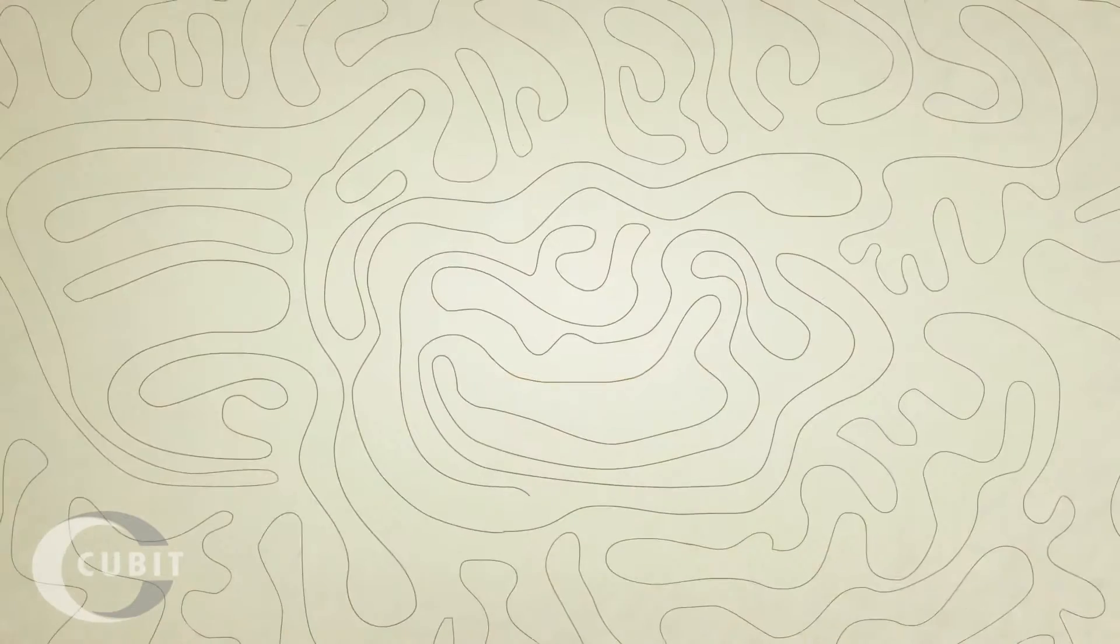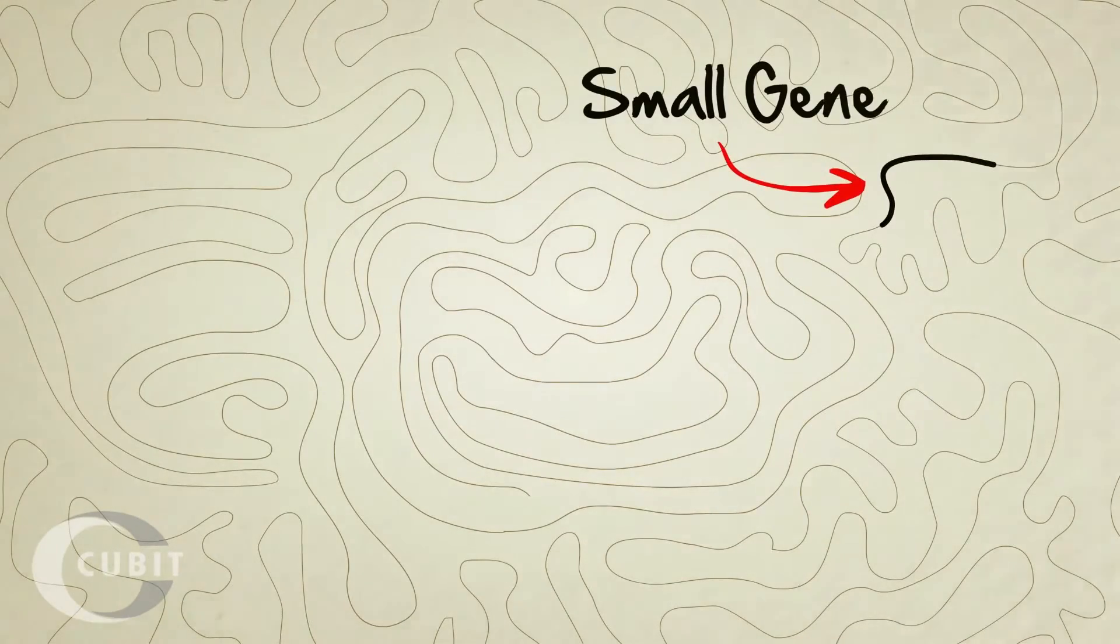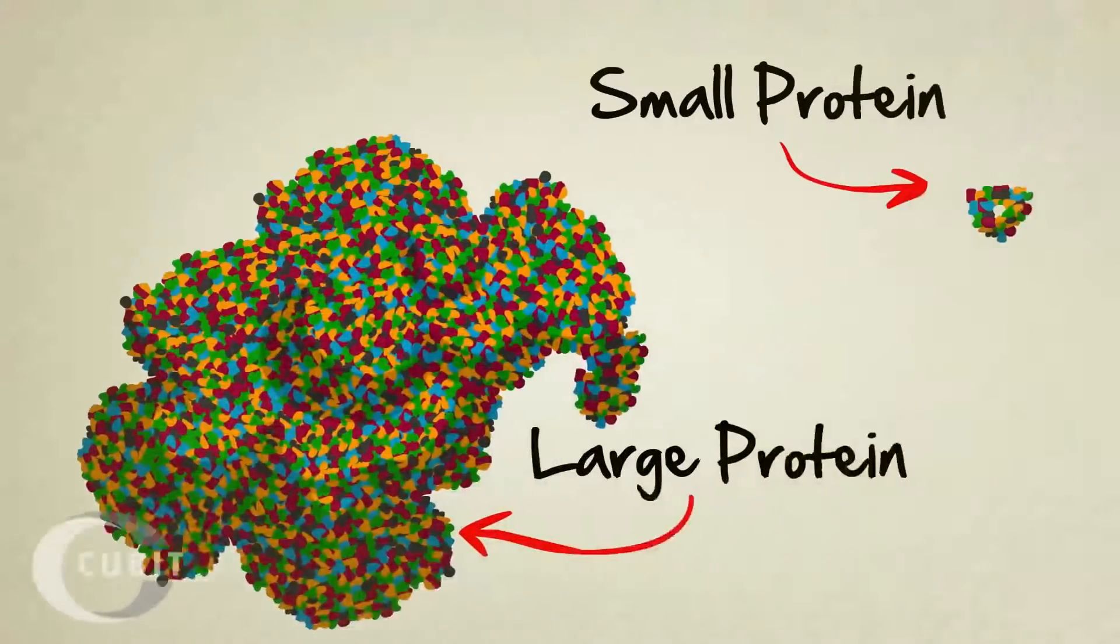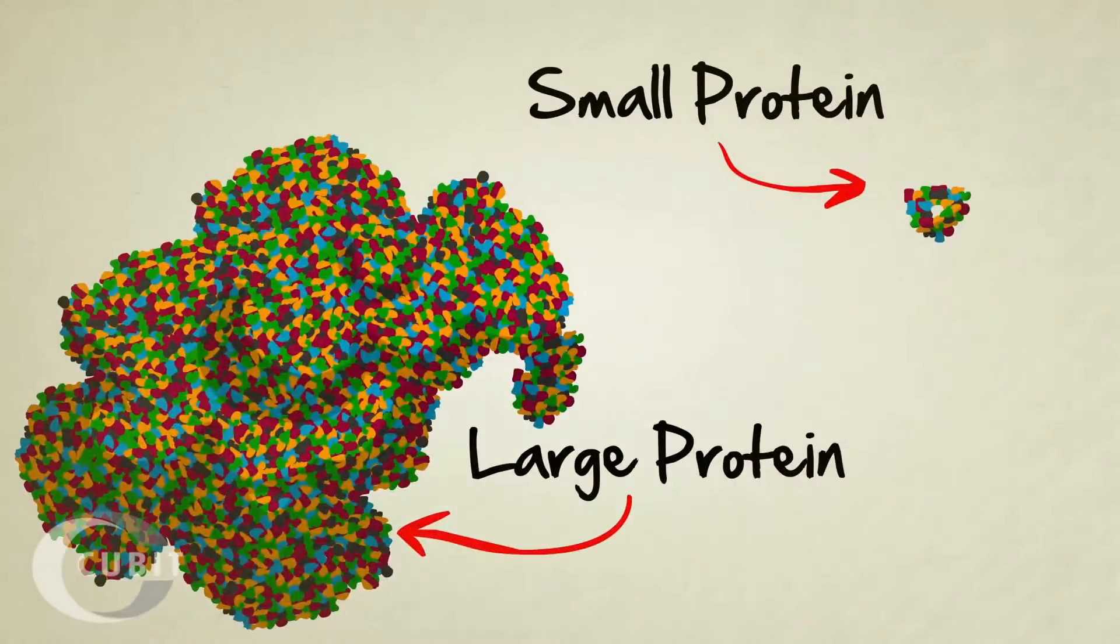Some genes are small, only about 300 letters long. Others are well over a million. The length and sequence of a gene determine the size and shape of the protein it builds. The size and shape of the protein determine the function that protein will have inside the body.